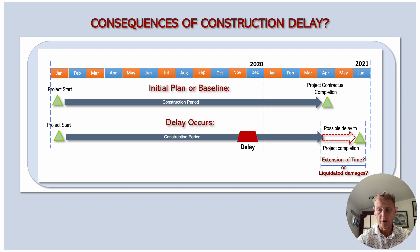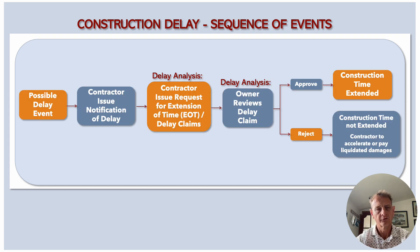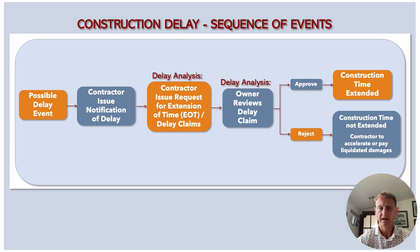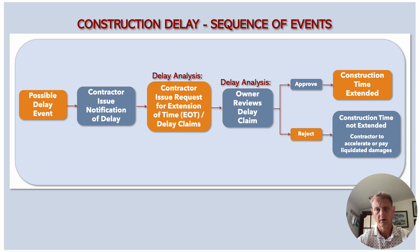So let's see how this process normally unfolds. Firstly, the contractor would become aware of a certain event that might delay completion. Most contracts would require the contractor to issue a formal notification of delay. This notification can take various forms — it can be an email or a written document, and the contract would normally give guidance. This document would go to the owner, enabling the owner to take certain action from their side to assist in reducing the impact of the delay.